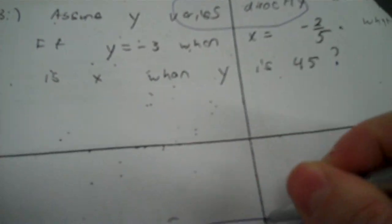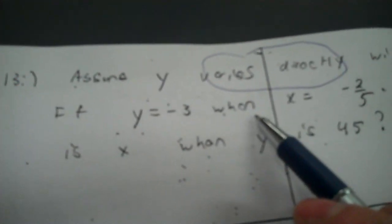Number 13: assume Y varies directly. That means you're going to set up proportions. If Y equals negative 3 when X equals negative 2/5, I put negative 3 over negative 2/5, then Y over X. What is X if Y is 45? Put 45 across from the negative 3 and cross multiply and divide: negative 2/5 times 45 divided by negative 3, and that's 6.